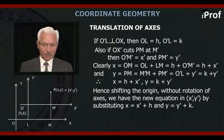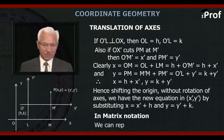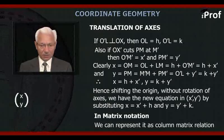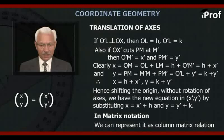In matrix notation, we can represent it as a column-matrix relation. That is, matrix [X,Y] in columns is equal to matrix [X',Y'] in column plus [h,k], again a column matrix.